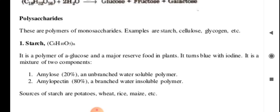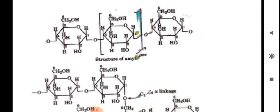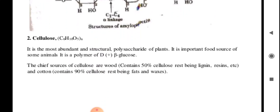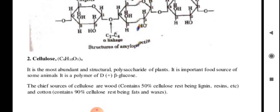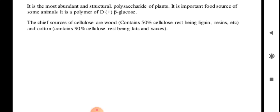Sources of starch include potatoes, wheat, rice, and maize. Cellulose, (C6H10O5)n, is the most abundant structural polysaccharide of plants and an important food source for some animals. It is a polymer of D(+) beta-glucose. Cheap sources of cellulose: wood contains 50% cellulose, the rest being lignin, resin, etc., and cotton contains 90% cellulose, the rest being fats and waxes.